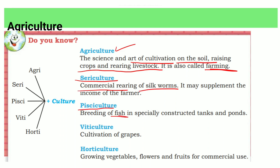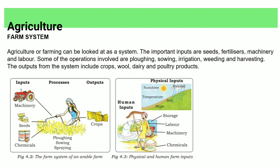Pisciculture means related to breeding of fish. Viticulture is the cultivation of grapes. Horticulture means growing vegetables and fruits. Horticulture is a farming system.